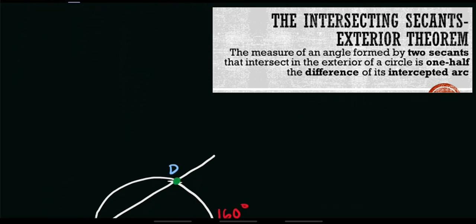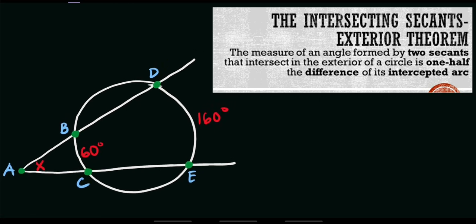Let's try to solve this given problem. For example, we have this given circle with an exterior angle x. DE is equal to 160 degrees and BC is equal to 60 degrees. If you're asked to solve for the exterior angle of two intersecting secant lines, the formula is: x is equal to half of the difference of its intercepted arcs — DE, our first arc, minus the value of our second intercepted arc, which is BC.